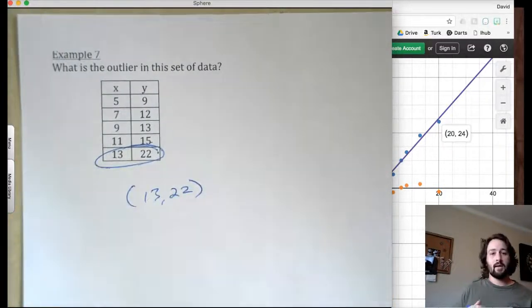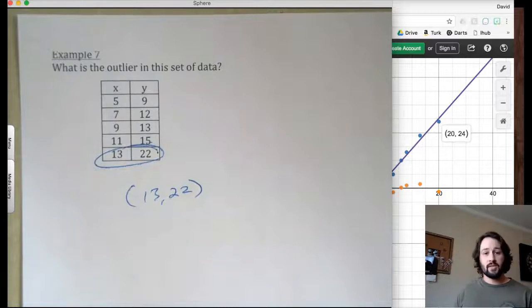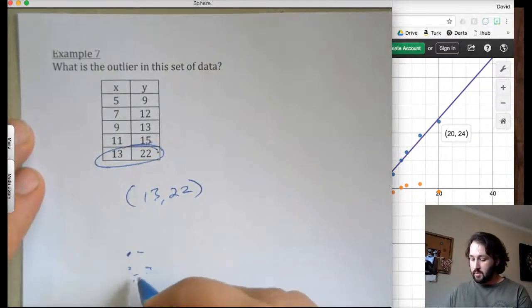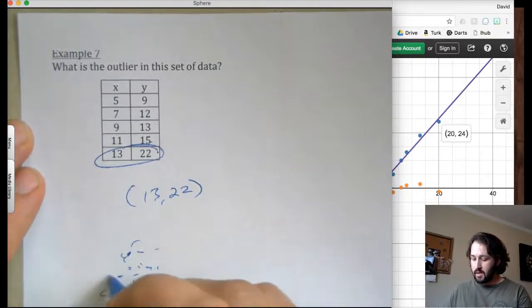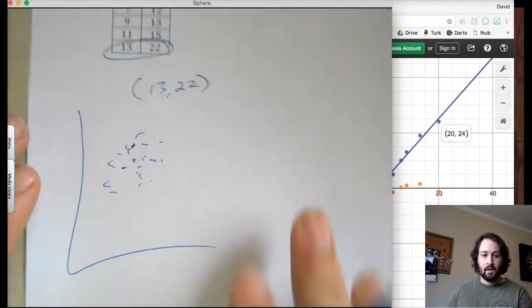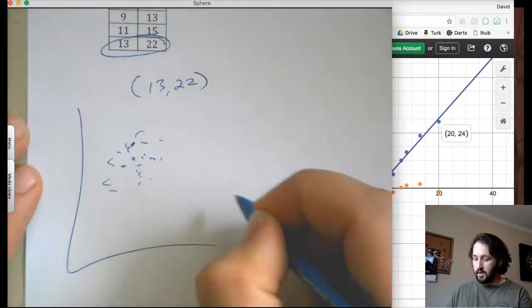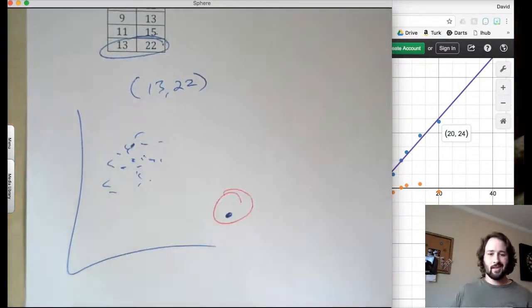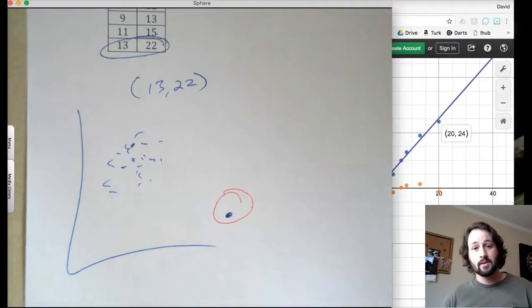It's something that it's just like way far off from the actual set of data that we got. So if we have a bunch of points, right, all of our points are kind of hanging out in this area. And then we have one point like way over there. That point that's just like out in the middle of nowhere, that is called our outlier.